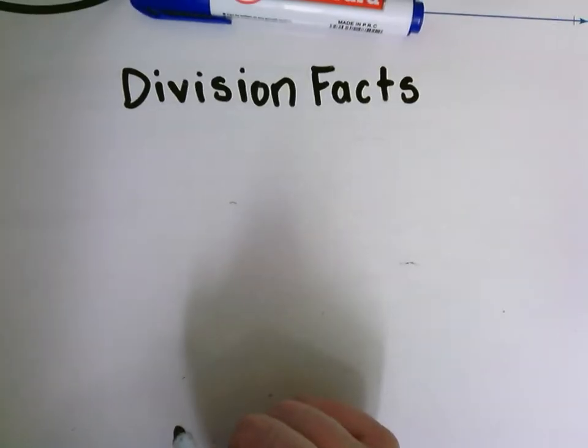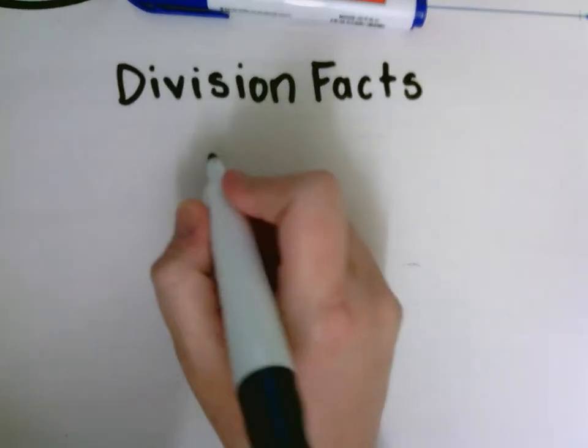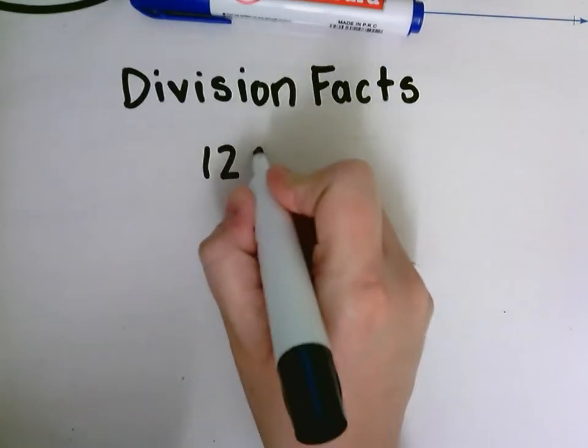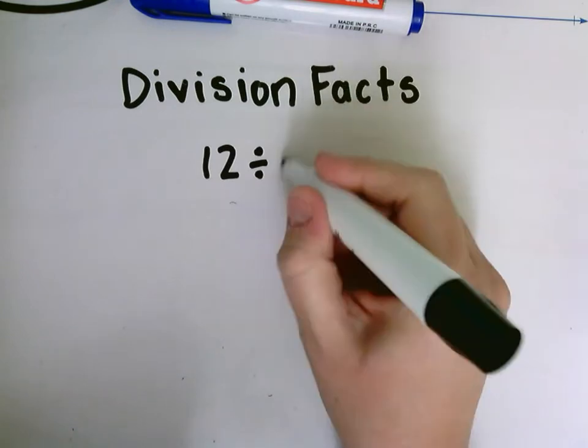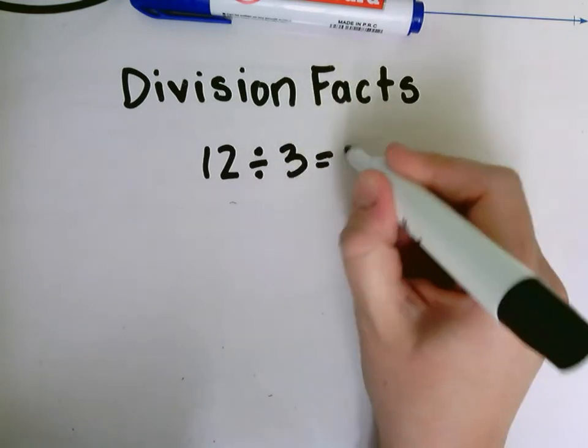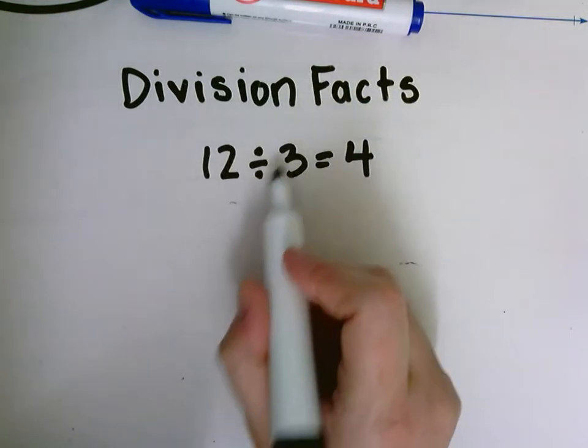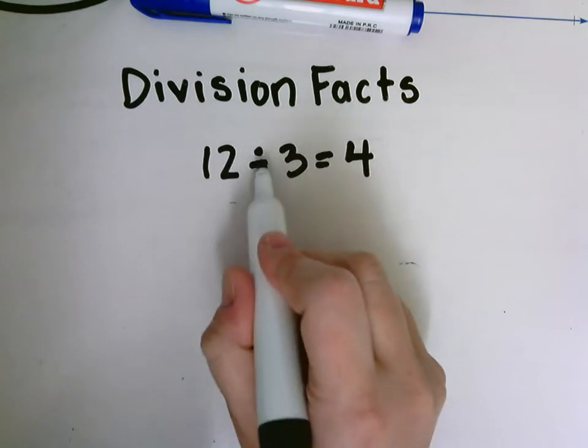When I write out division it has a little bit of a different symbol. You might see something like this: 12 divided by 3 equals 4. Okay, so that is one way that we can show division.